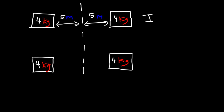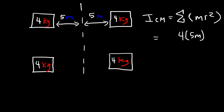The inertia of the system as the axis passes through the center of mass is the sum of the individual moments of inertia of each object — the sum of mr squared. Each block has a mass of 4 and an r value of 5 meters. For each of the four identical blocks, multiply by four to get the total inertia: 5 squared is 25, 25 times 4 is 100, and 100 times 4 is 400. So the inertia is 400 kilogram times meter squared.